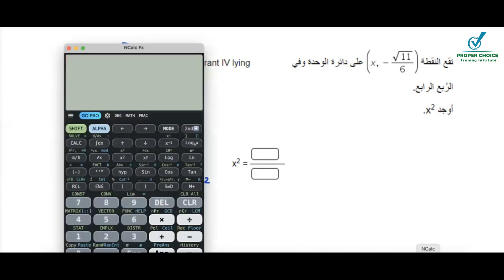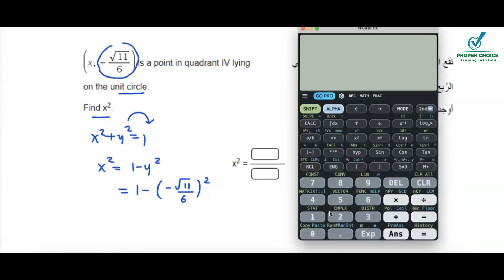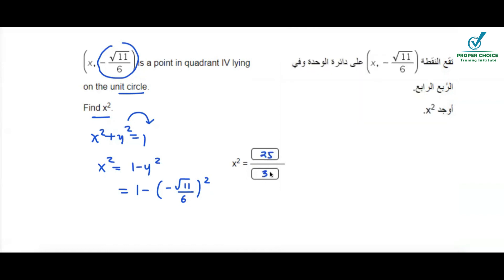Just take the help of a calculator, you'll be getting the answer for it. So what is it going to be? 1 minus bracket negative square root of 11 by 6, make a square of it. So that gives us 25 by 36. The value of x² here is 25 by 36.